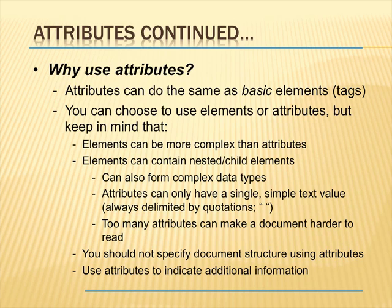If you're trying to choose between elements and attributes, keep in mind that elements can be more complex than attributes. An element can contain nested or child elements, and it can also contain more complex data types, whereas attributes can only have a single simple text value since they're always enclosed in quotes. And if you have too many attributes it can make a document much harder to read. You shouldn't try to specify the structure of a document using attributes — it's better to specify the structure using elements. If you use attributes at all, you should use them to indicate supplementary information about something.